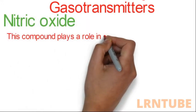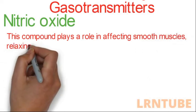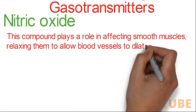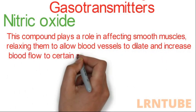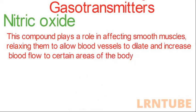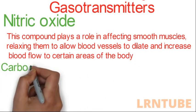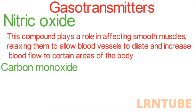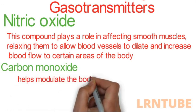Under gasotransmitters, we have nitric oxide and carbon monoxide. Nitric oxide plays a role in affecting smooth muscles, relaxing them to allow blood vessels to dilate and increase blood flow to certain areas of the body. Carbon monoxide is a colorless, odorless gas that can have toxic and potentially fatal effects at high levels. However, it is also produced naturally by the body, where it acts as a neurotransmitter that helps modulate the body's inflammatory response.